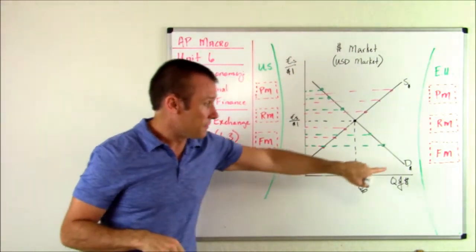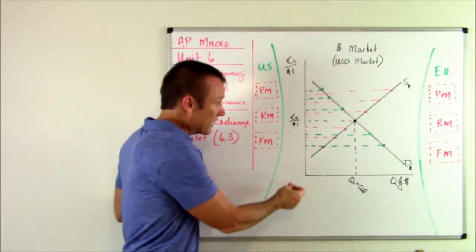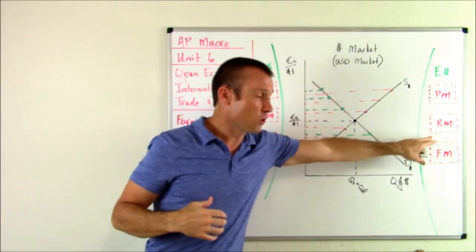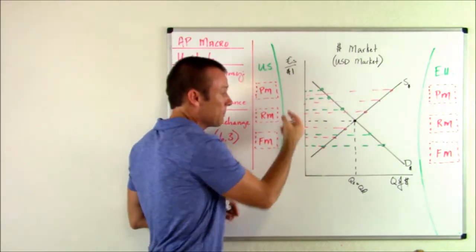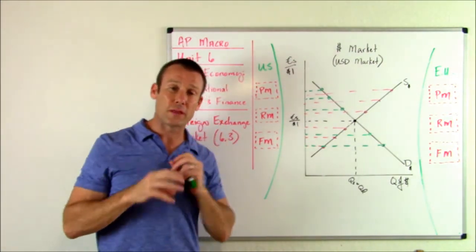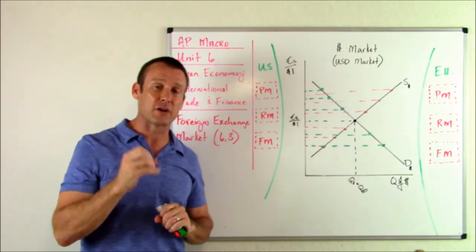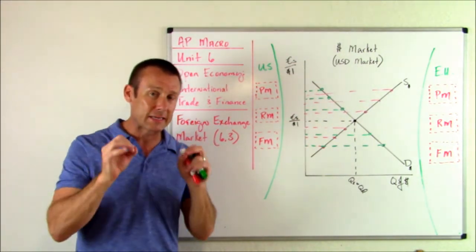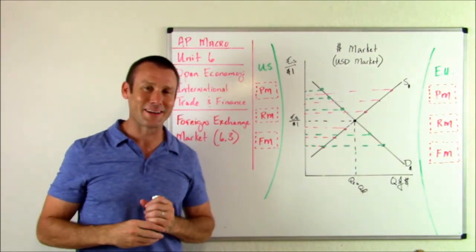The demand for dollars has an inverse relationship with the price of the dollar. As the price of the dollar goes up, everything in U.S. markets becomes more expensive, so people from other countries want to come to those markets less, and the quantity demanded decreases. That's our first look at the foreign exchange market — the Forex market, the currency exchange market — a market that is a means to an end. We'll see you in the next video.